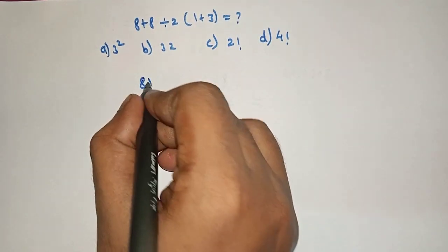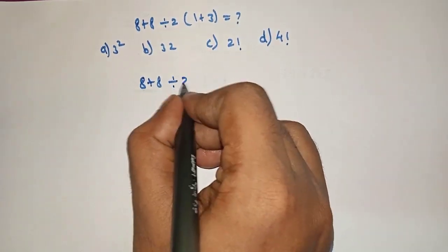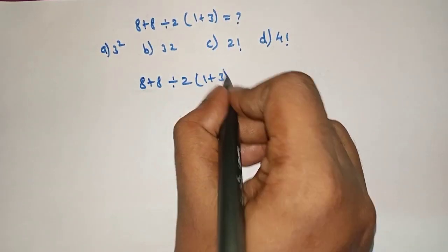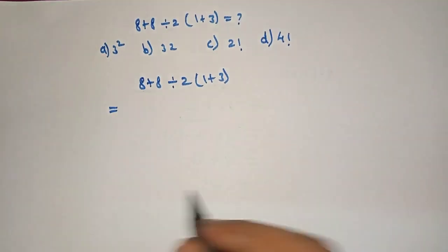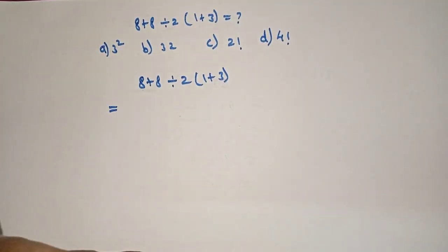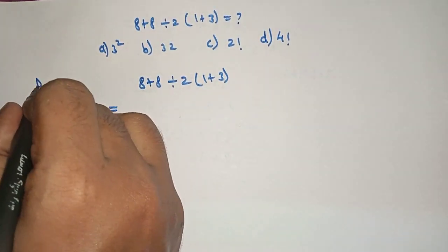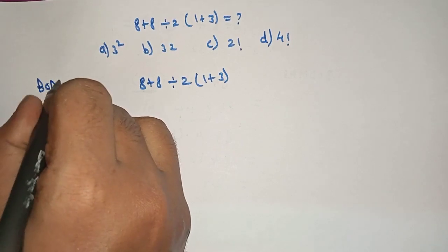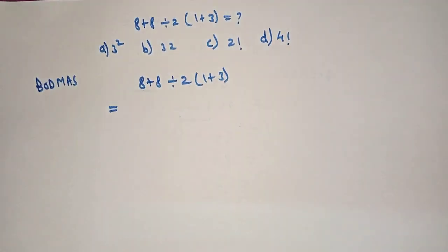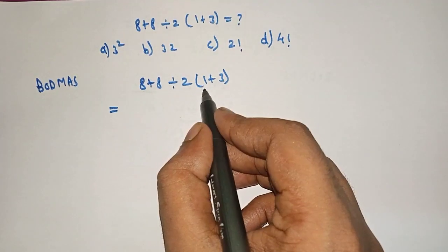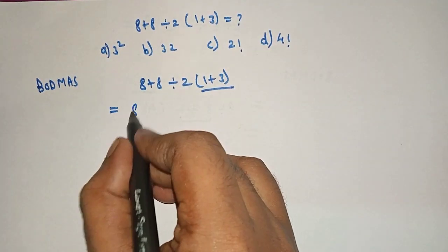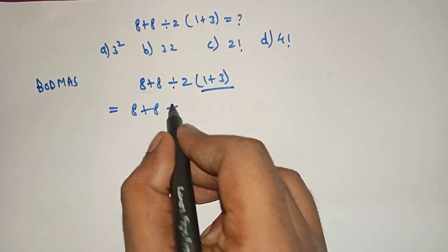So let's solve 8 plus 8 divided by 2 in the bracket 1 plus 3 is equal to. Here we will use BODMAS rule to solve this. So firstly we will solve this term.